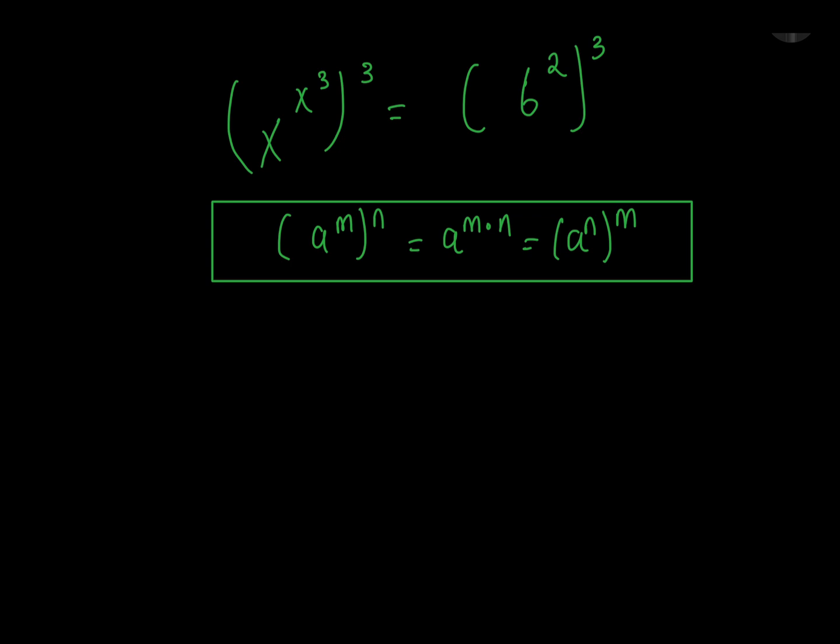Using this, we're gonna have x to the power 3 times x to the power 3. This will be equal to 6 to the power 2 multiplied by 3 using this.